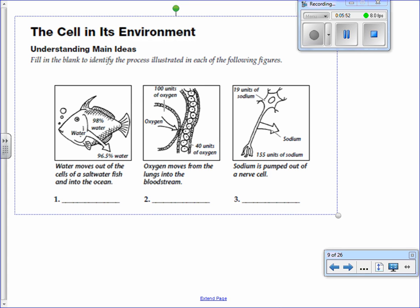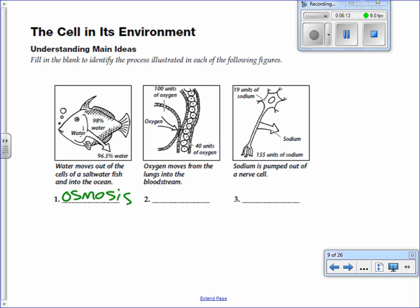So that's diffusion, molecules moving from an area of greater concentration to lesser concentration. And this ends up being very useful for cells. So let's take a look at these three pictures and decide what is happening in each one. Water moves out of the cells of a saltwater fish and into the ocean. So is this diffusion, osmosis, active or passive transport? What's going on here? Osmosis. Why is this osmosis? Does everybody agree? There's two keys to making it osmosis: that it's water and it's moving through a cell membrane. Osmosis is the diffusion of water.